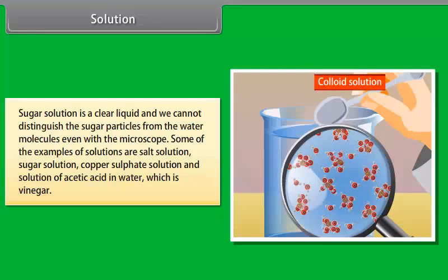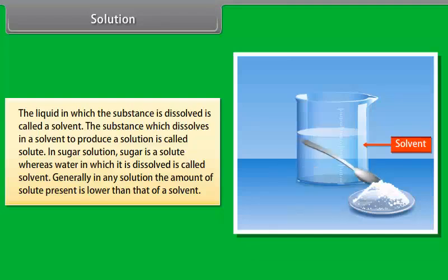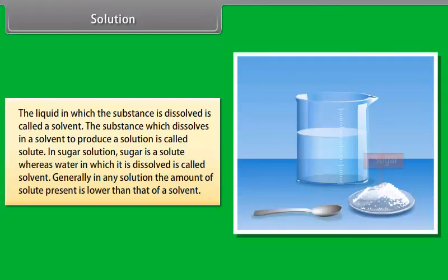Mixtures can be classified as heterogeneous or homogeneous. Solutions are homogeneous mixtures at the particle level. A heterogeneous mixture is usually apparent at the microscopic level — it is obviously a mixture of two different substances, such as salt and pepper or oil and vinegar, that may or may not be in different physical states such as liquid and gas.